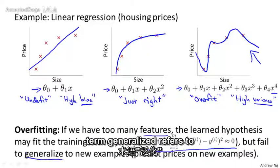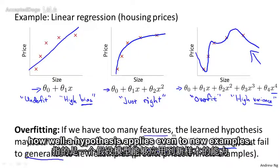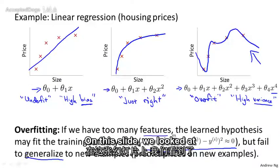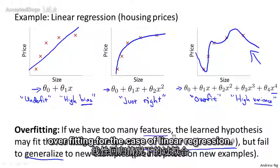And here the term generalized refers to how well a hypothesis applies even to new examples, that is, to data, to houses that it hasn't seen in the training set. On this slide, we looked at overfitting for the case of linear regression.